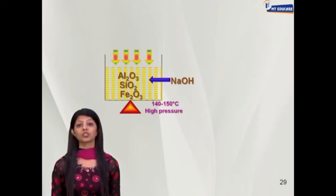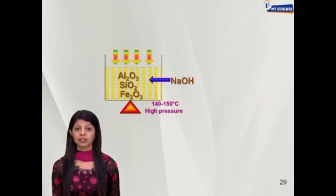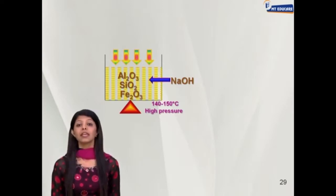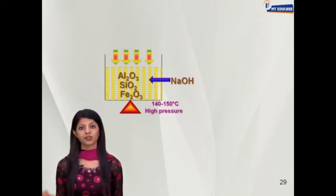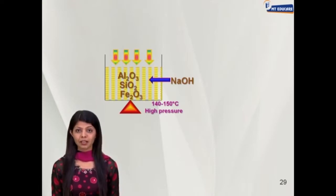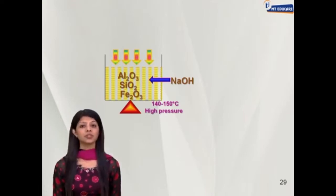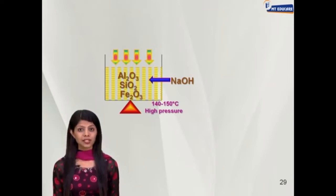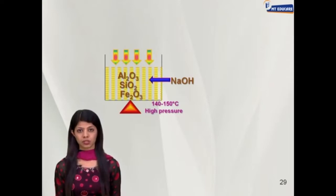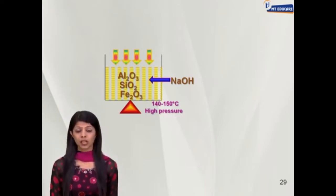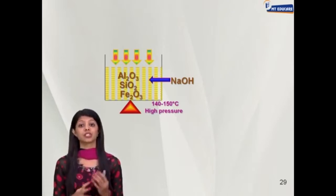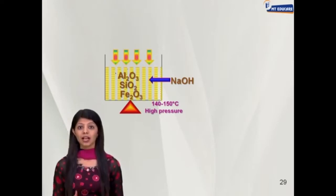To repeat: we are taking a tank called a digester. In this digester we have taken caustic soda liquid, that is sodium hydroxide. Into this sodium hydroxide liquid we add the crushed bauxite ore — which contains aluminium oxide, silica, and iron oxide. We cover it with a metal lid to create high pressure, and then heat it for two to eight hours for a long time while reactions take place inside.